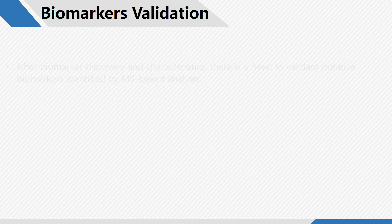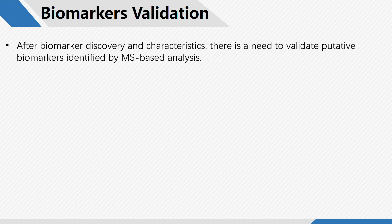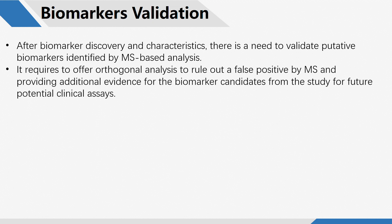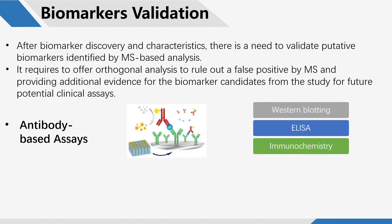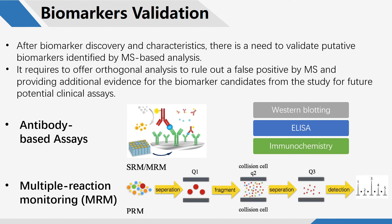After biomarker discovery and characterization, there is a need to validate putative biomarkers identified by mass spectrometry-based analysis. It requires orthogonal analysis to rule out false positives by mass spectrometry and to provide additional evidence for the biomarker candidates for future potential clinical assays. Antibody-based assays like Western blotting, ELISA, and immunochemistry are commonly used methods for biomarker validation. In addition, quantitative assays based on multiple reaction monitoring mass spectrometry have been employed in biomarker verification due to their enhanced throughput and specificity.